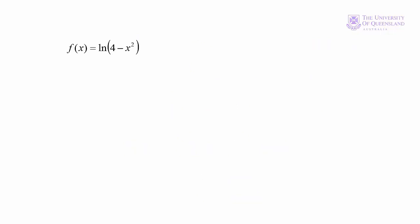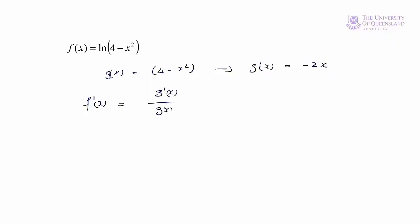Let's apply that rule directly. Here g(x) = 4 − x², so g'(x) = −2x. Then f'(x) = g'(x) / g(x) = −2x / (4 − x²). You might like to check that we get the same result using the chain rule.